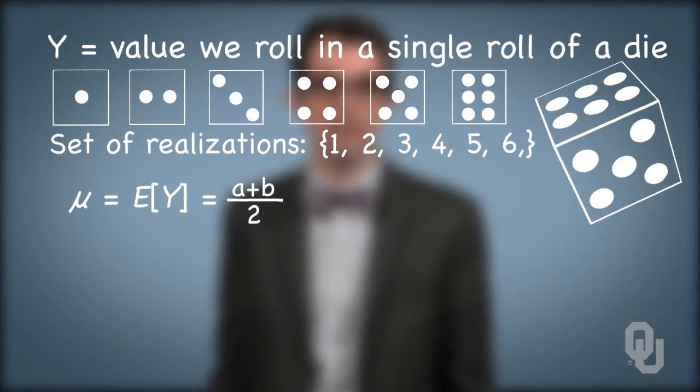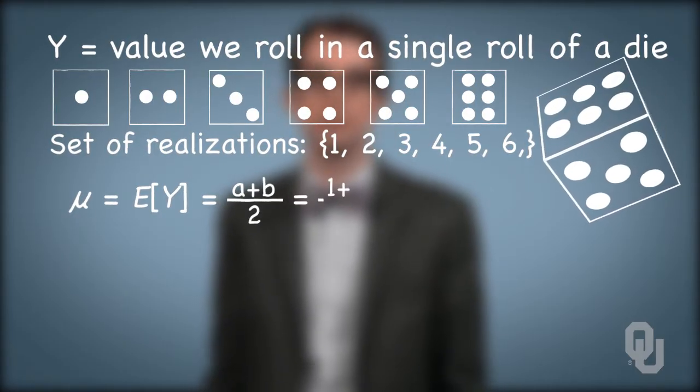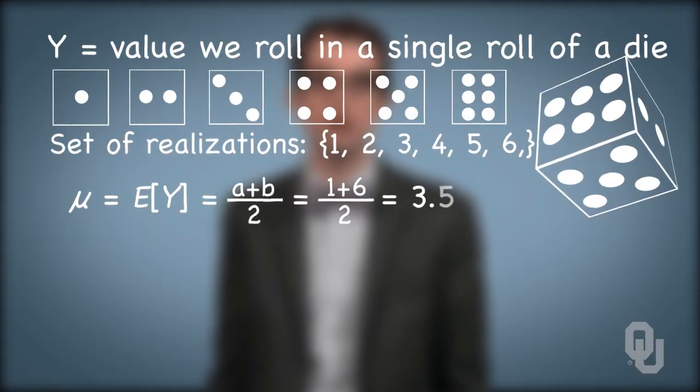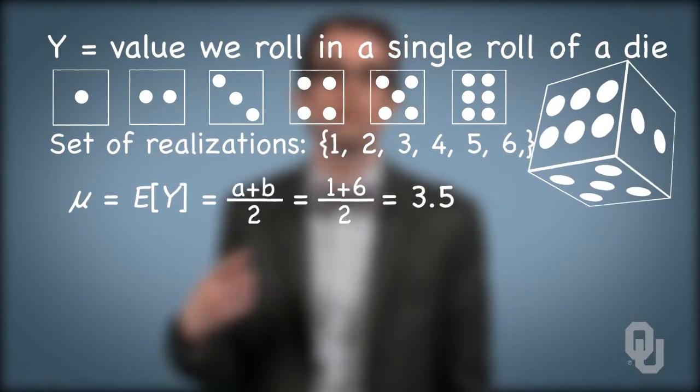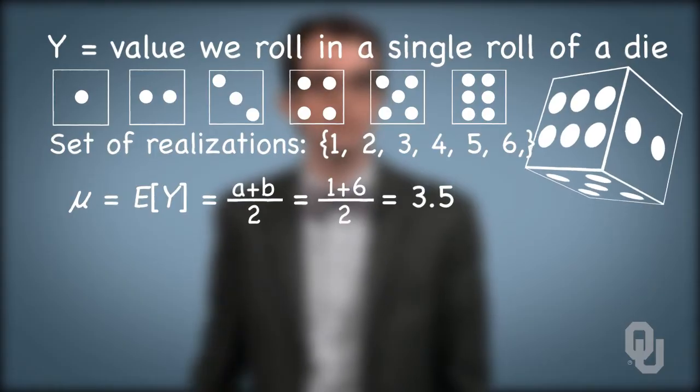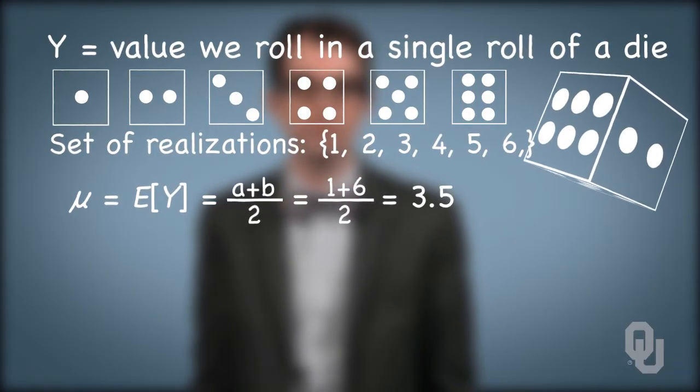For the die example, the expected value is one plus six divided by two, or 3.5. If we repeat the experiment over and over, what would we expect the random variable to be? 3.5.